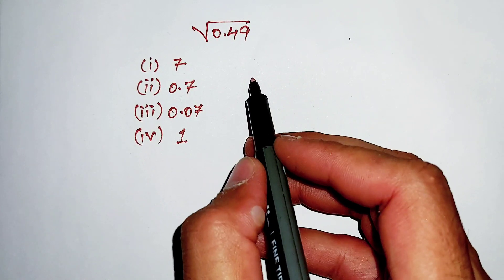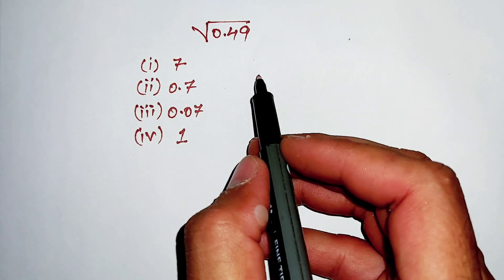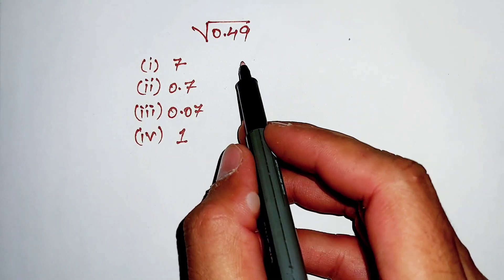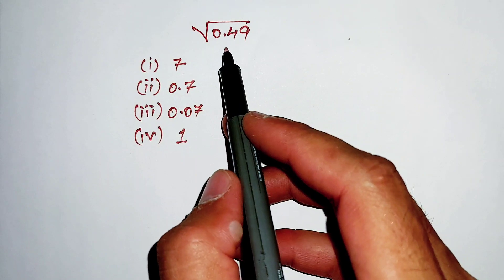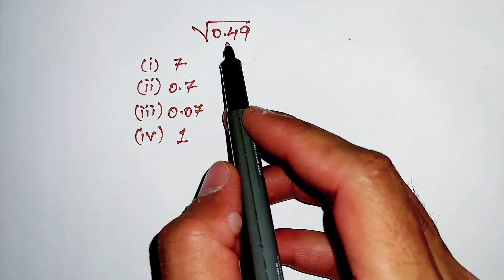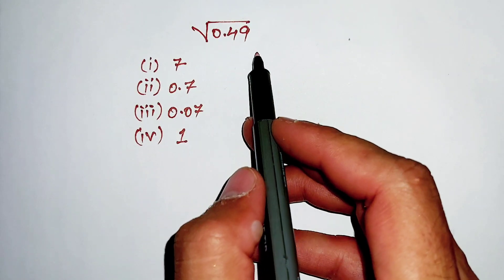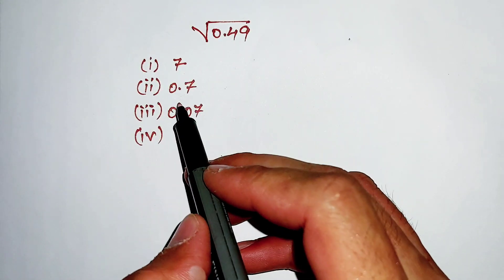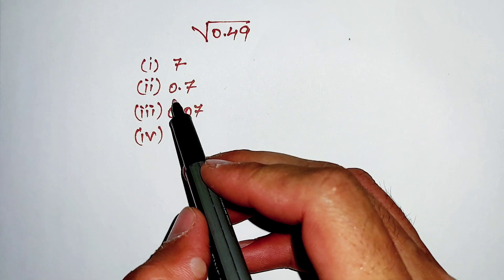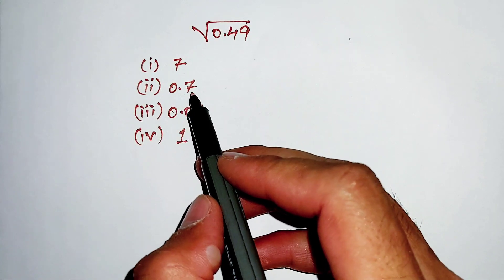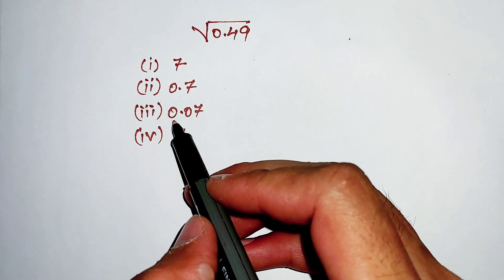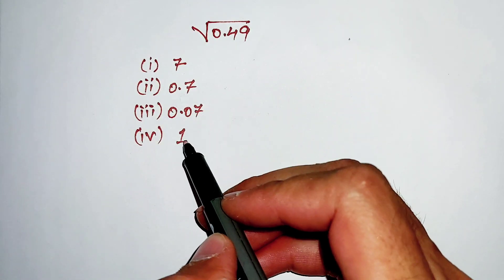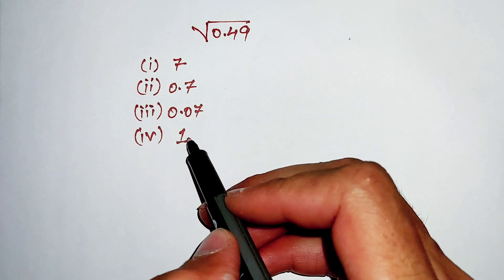Hello friends, the question is: we have to find the square root of 0.49. Is it 7, 0.07, 0.7, or 1? Let's find out.